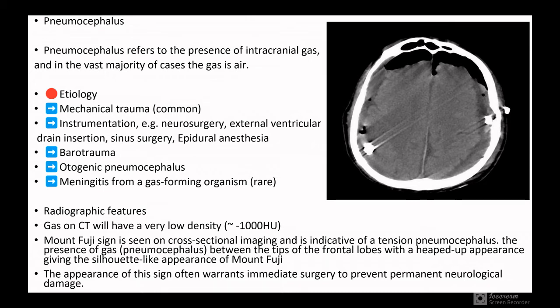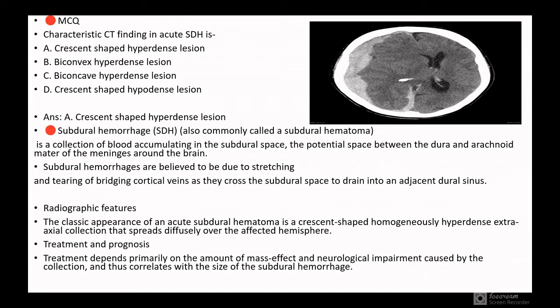Radiological features: gas on CT will have very low density, around minus 1000 Hounsfield units. Mount Fuji sign is seen in cross-sectional imaging and is indicative of tension pneumocephalus. The appearance of gas between the tips of the frontal lobes with a heaped-up appearance gives the silhouette-like appearance of Mount Fuji. The appearance of this sign often warrants immediate surgery to prevent permanent neurological damage.